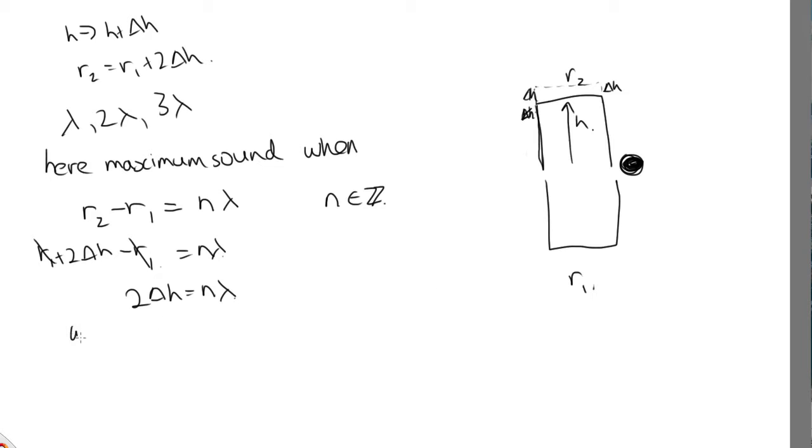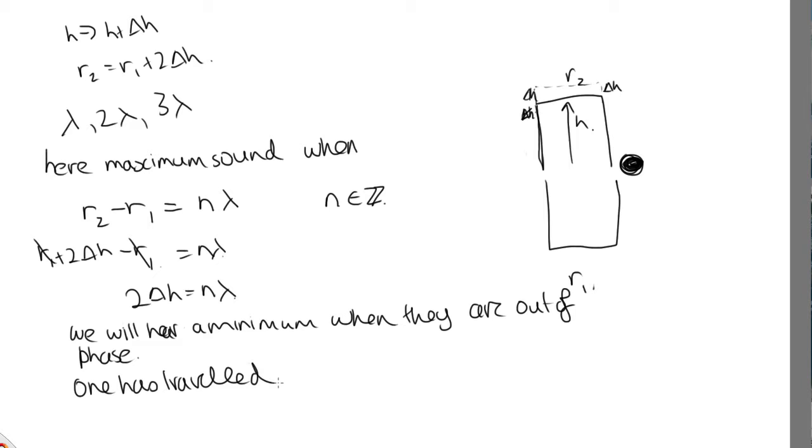We'll hear a minimum when they are out of phase. So that's when one has travelled some integer number of wavelengths plus a half wavelength more than the other.